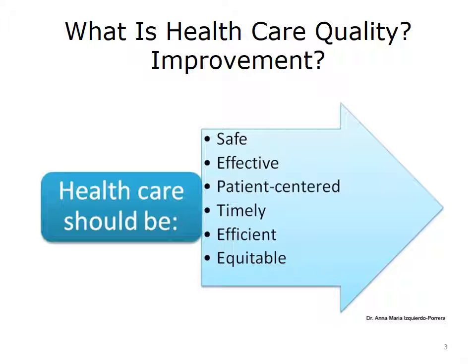So what needs improvement in our health care system? In 2001, the U.S. Institute of Medicine, also referred to as the IOM, produced a report that called for a marked redesign of the American health care system. The IOM called for transformational change to help close the quality gap, and provided far-reaching principles for those who purchase, provide, regulate, and make policy for health care. This report identified six aims of quality improvement.